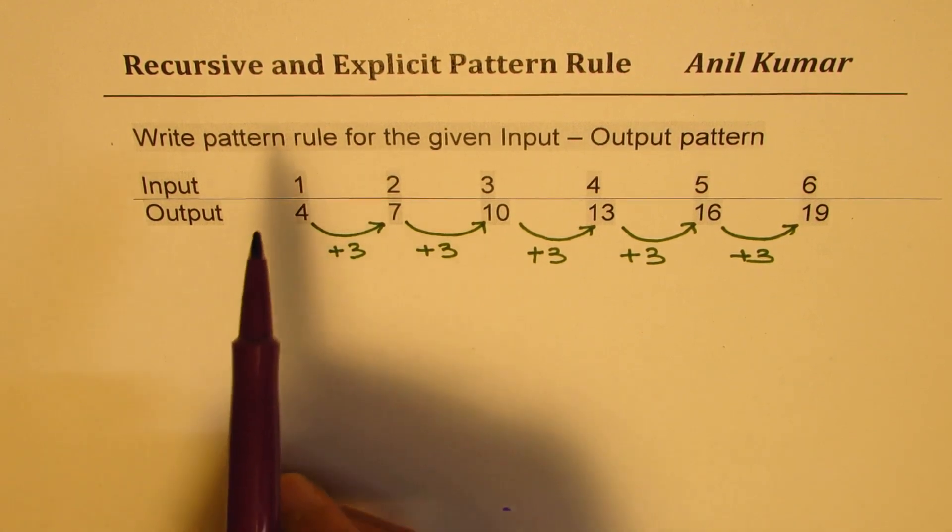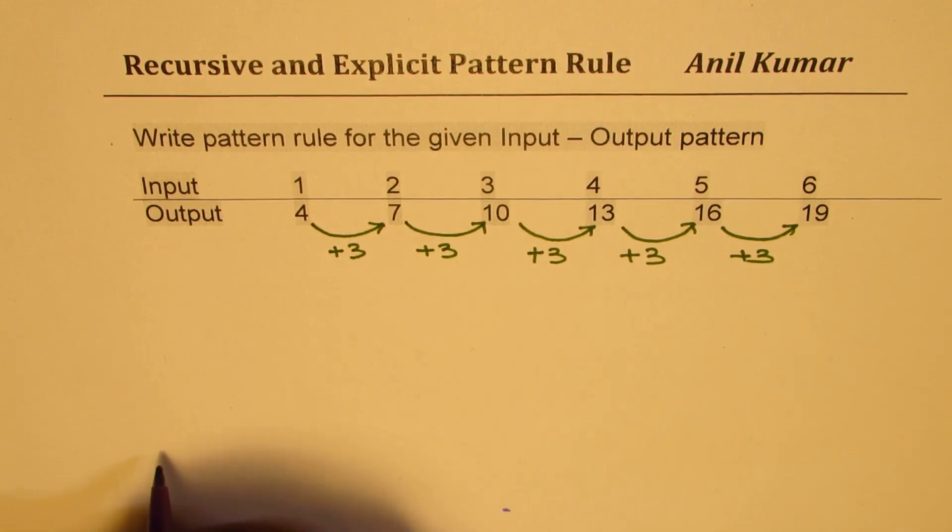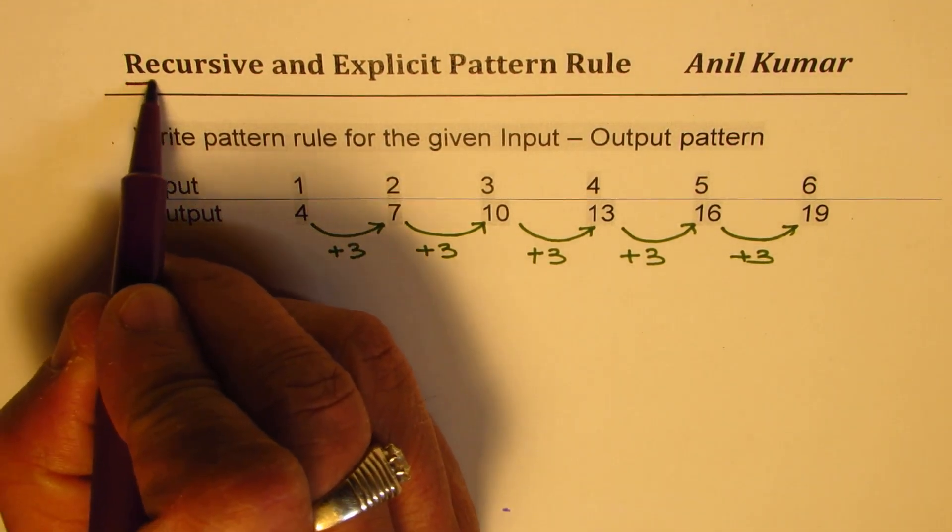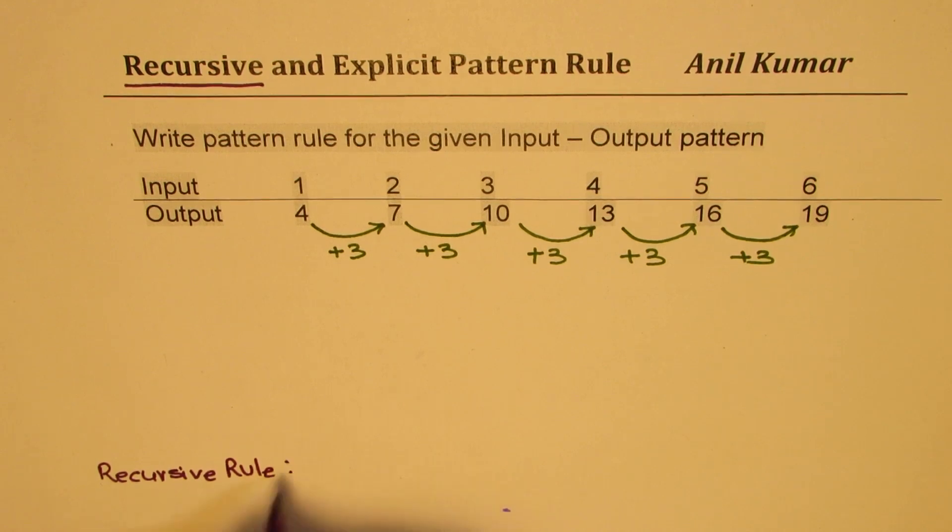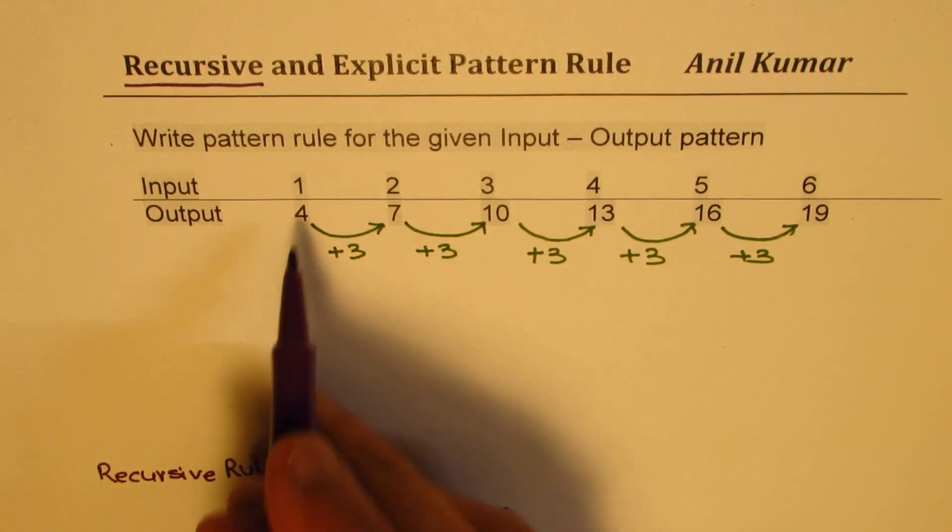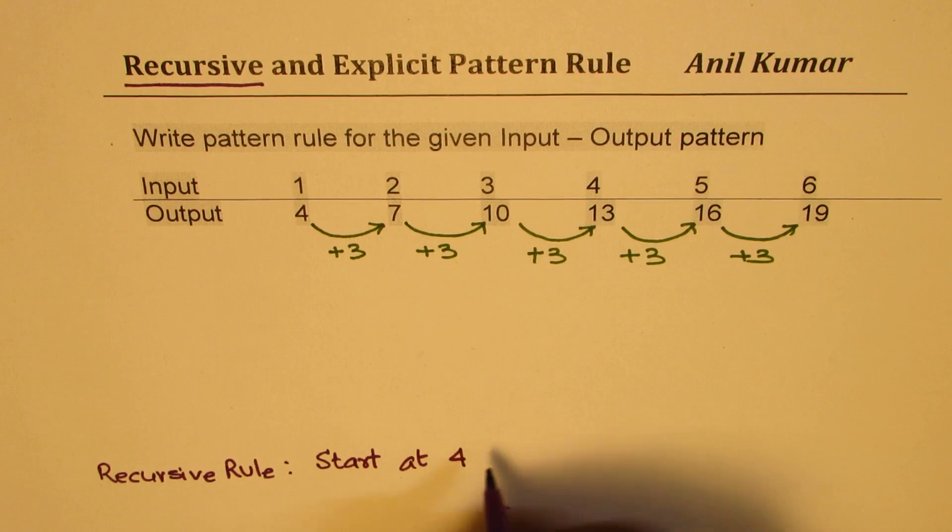Now if I have to write a rule for this, till now in our junior classes we had been using recursive rule. So let me write it down at the bottom here. What is the recursive rule for this particular pattern? So a student will write start at 4 and then add 3 each time.